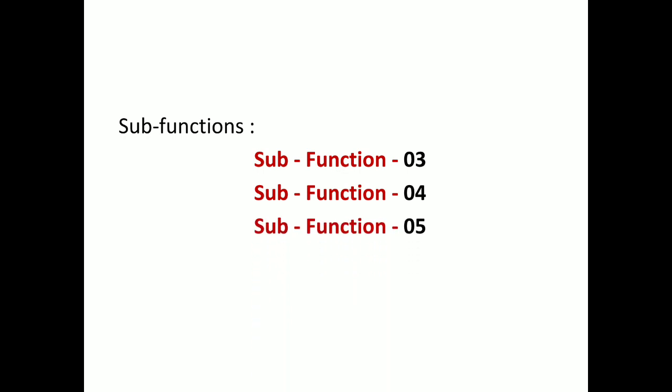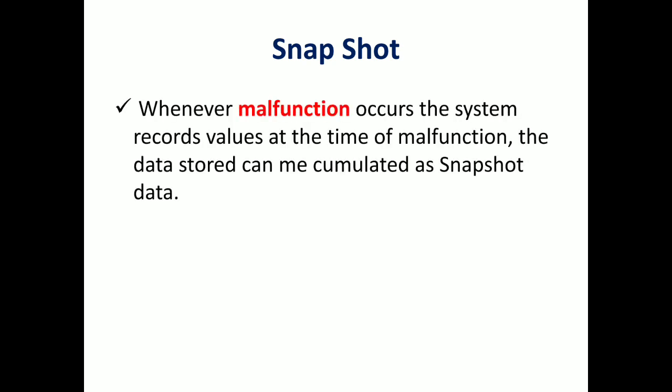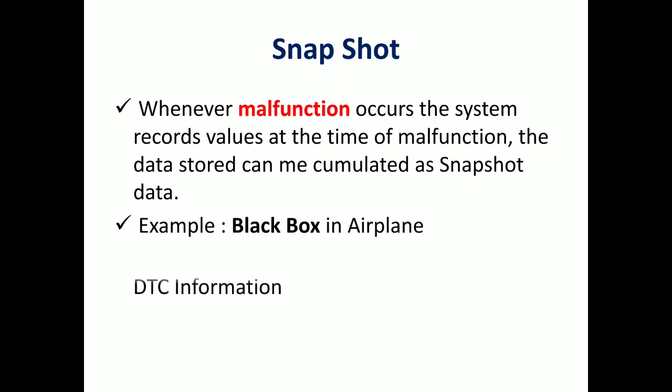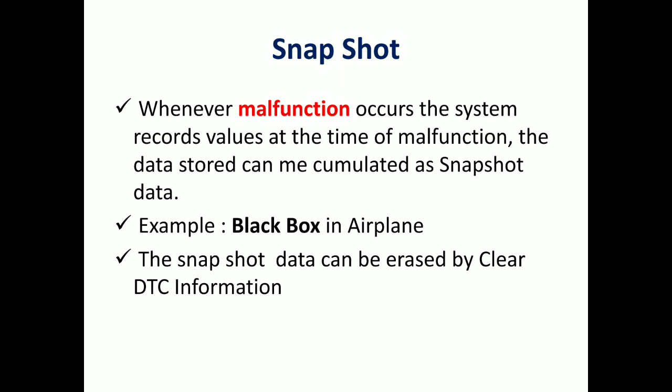These three sub-functions — 03, 04, and 05 — have been categorized because they all belong to snapshot records. Before going to the sub-functions, try to understand what a snapshot record is. Whenever a malfunction occurs, the system records the values at the time of malfunction — this data stored is called snapshot data. Just like a black box in an airplane records everything during a crash, the snapshot acts in the ECU. Snapshot data can be erased using the Clear DTC Information service with parameter 14 FF.